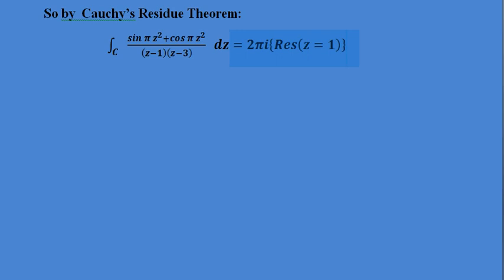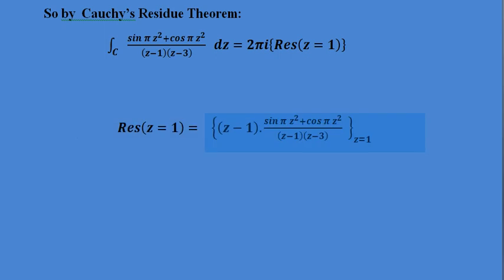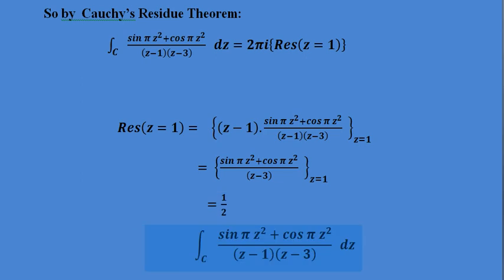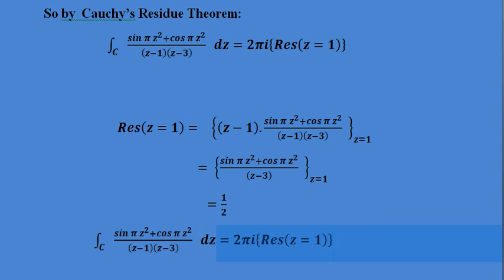According to Cauchy's residue theorem, the value of this integral equals 2πi times the residue at z = 1. We find the residue at z = 1 using the simple pole formula: (z−1) multiplied by the function, then substitute z = 1. This gives residue = 1/2. So the integral of (sin πz² + cos πz²) / ((z−1)(z−3)) dz = 2πi × (1/2) = πi.